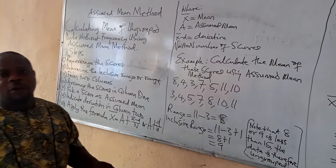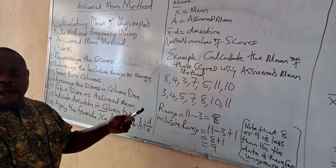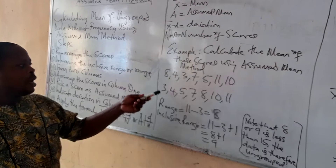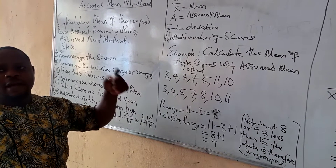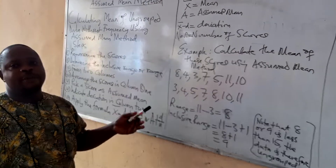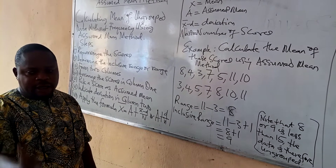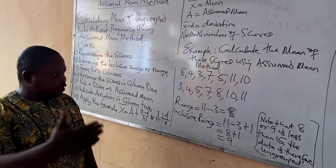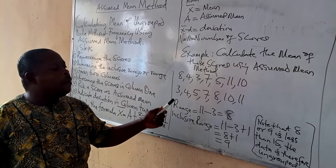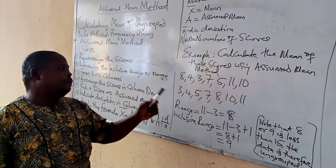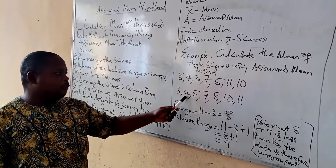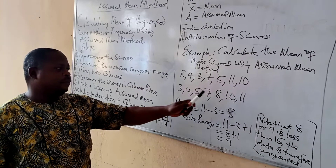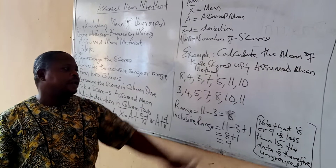From the steps, the first thing we need to do is to rearrange the scores, and that is what has been done here. Remember that there are two ways the scores can be arranged — either ascending order of magnitude or descending order of magnitude. Here we are using ascending order of magnitude. So the scores are arranged as: three, four, five, seven, eight, ten, and eleven.